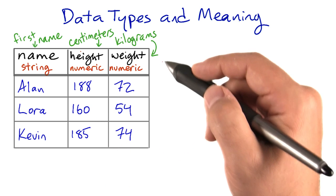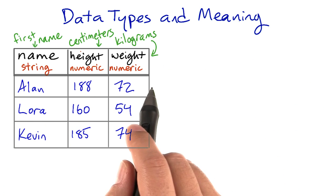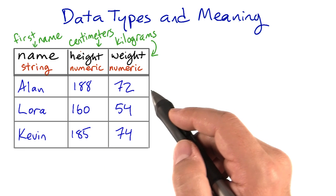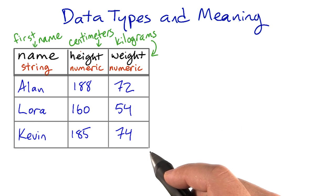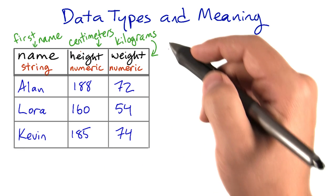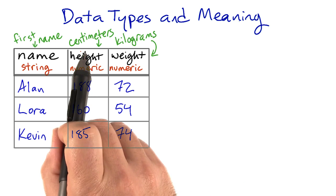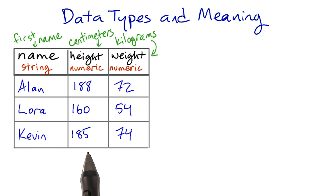Every column in a database table will have some type associated with it. All the values in that column will be of the same type. But moreover, they'll also have the same kind of meaning. We wouldn't mix centimeters and kilograms in the same column.